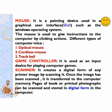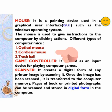The next input device is mouse. It is a pointing device used in a graphical user interface, i.e. GUI, such as the Windows operating system. The mouse is used to give instructions to the computer by clicking actions. Different types of computer mice: number one, optical mouse; number two, cordless mouse; and number three, trackball.